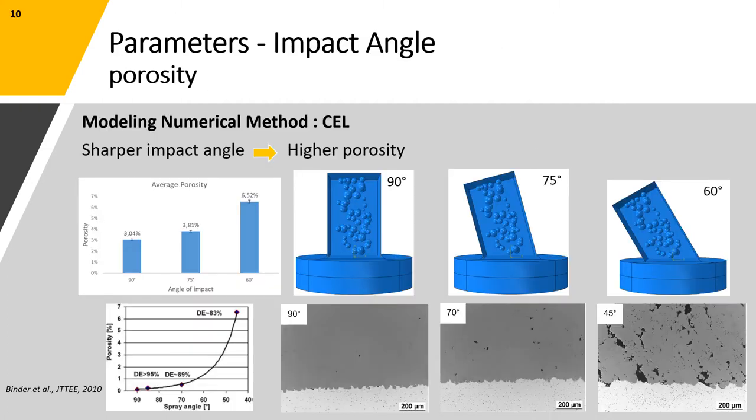Previous research indicates that a more acute angle of impact will result in a lower deposition rate, and hence a higher porosity. To evaluate that, we used a multi-particle impact CEL model that consists of 50 particles with a diameter equal to 30 micrometers on a cylindrical substrate with a diameter equal to 800 micrometers and a height equal to 200 micrometers. As can be seen, we evaluated porosity for the deposition of these particles with three different angles of impact equal to 90, 75, and 60 degrees.